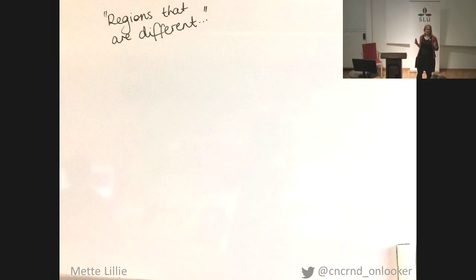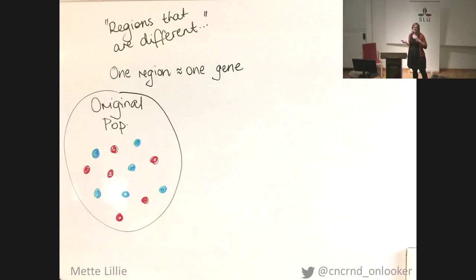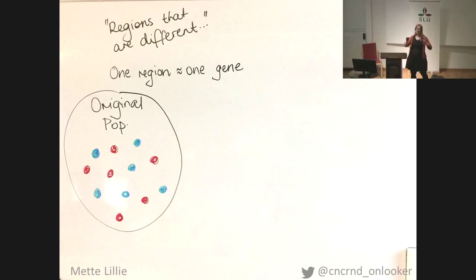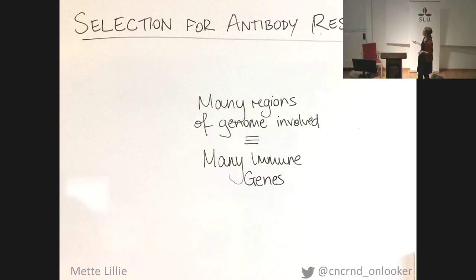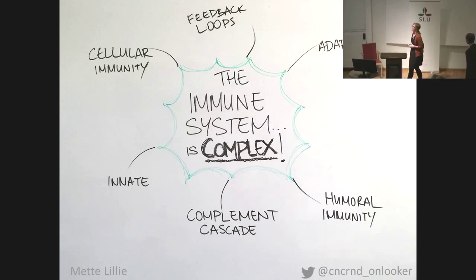What do I mean by this? Let's go through another diagram. These regions are different — let's consider one region is one gene. In our original population, we had two different gene variants. One actually had a benefit for the immune response; one didn't. Out of the 39 generations, you then see selection due to the changes. Throughout my work, we found many, many regions and many immune genes. But essentially, it all comes back to this whole idea that the immune system is complex.